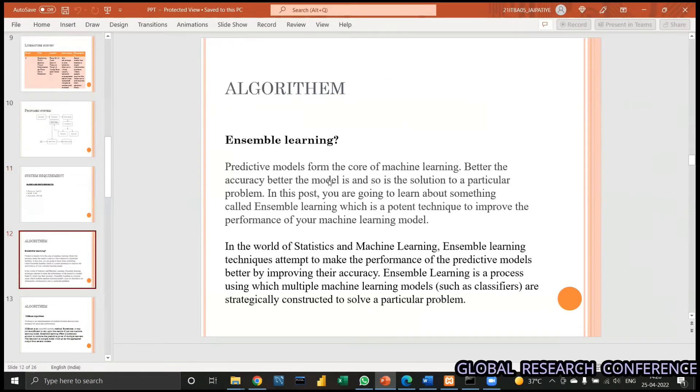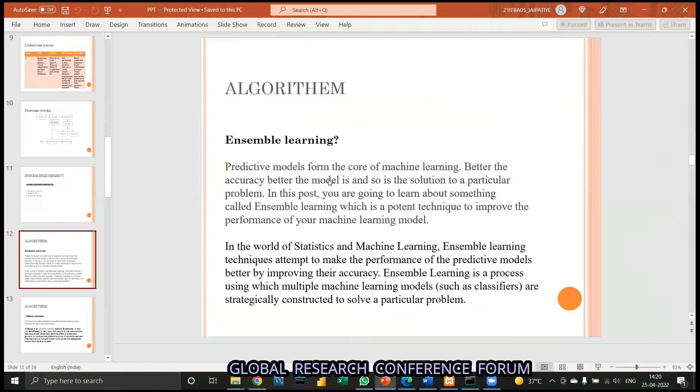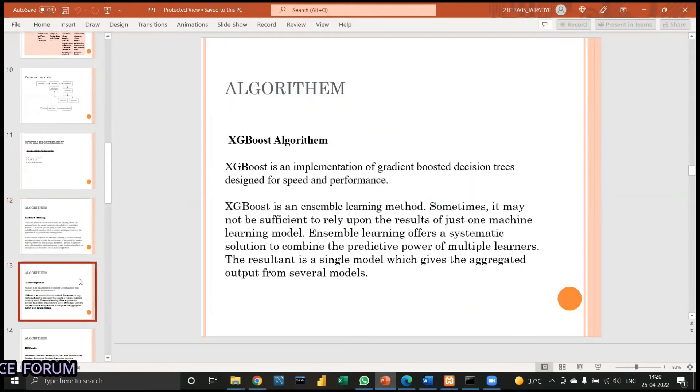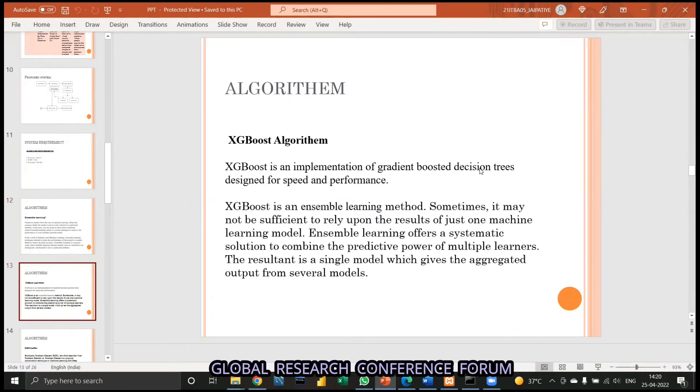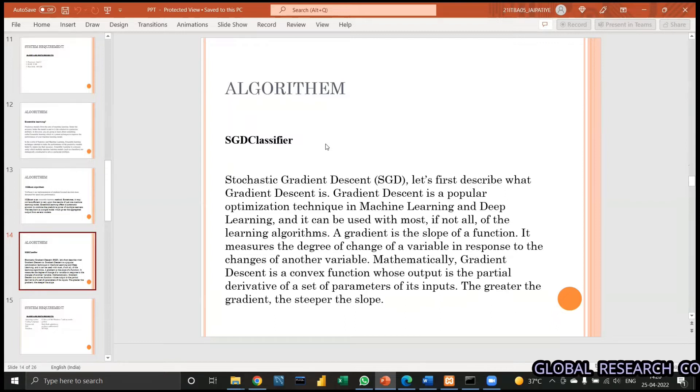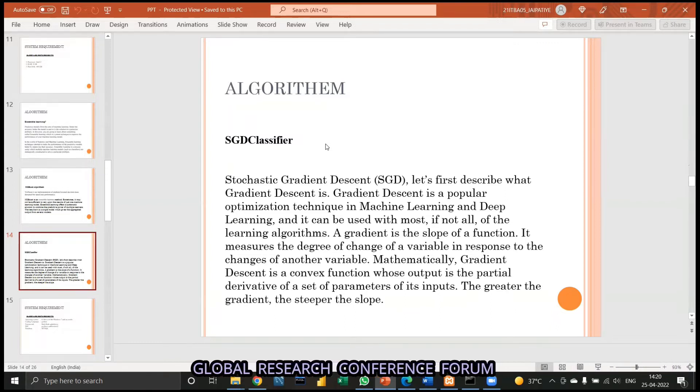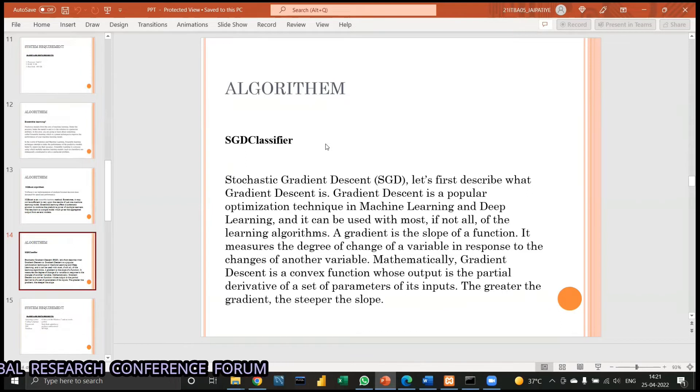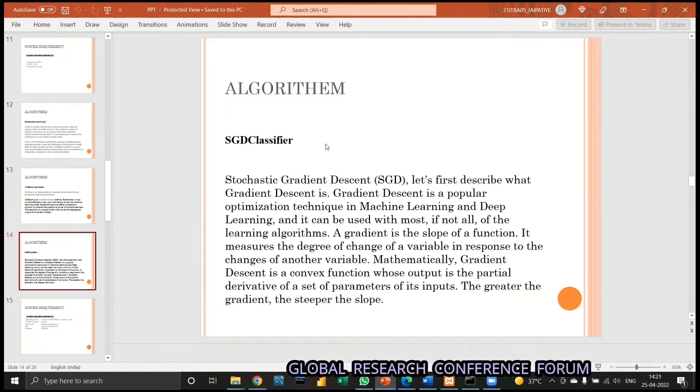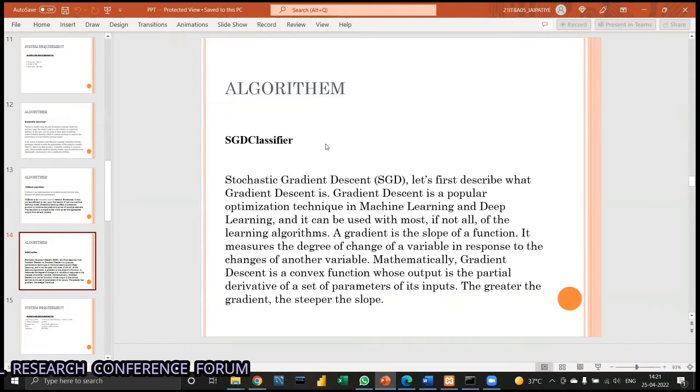Then there is ensemble learning. I explained what ensemble learning is. Then we have XGBoost - extreme gradient boosting, an upgraded version of gradient boosting. Then there is a SGD classifier, stochastic gradient descent. Stochastic gradient descent is one type of gradient descent. Gradient descent has, I guess, three or four types: one is stochastic gradient descent, batch gradient descent, online gradient descent, and general gradient descent. We have used stochastic gradient descent. There is not much difference in these gradient descents.